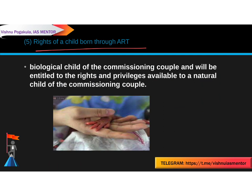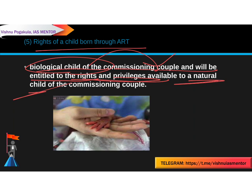The fifth feature covers rights of the child born through ART. A child born through ART completely belongs to the commissioning couple, who become the biological parents. The child will be entitled to all the rights and privileges available to a natural child. Importantly, the donor will not have any parental rights over the child.